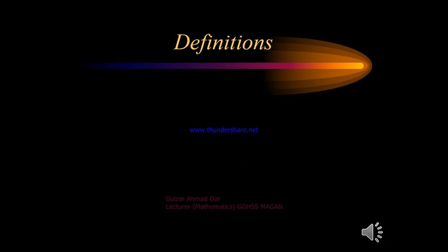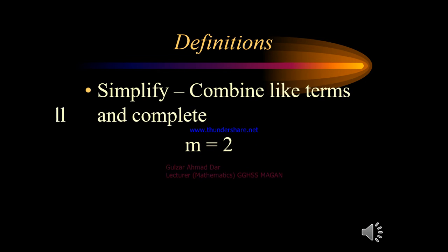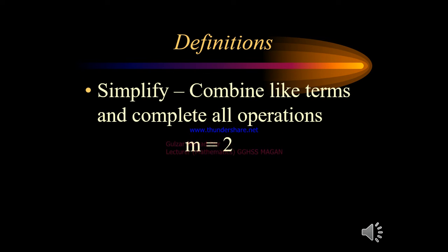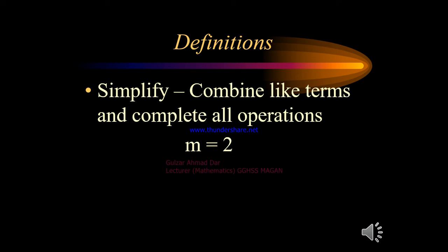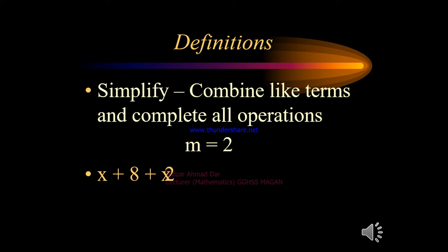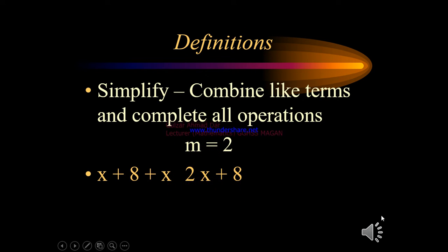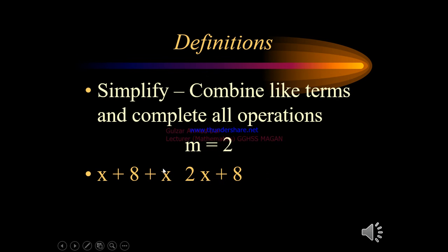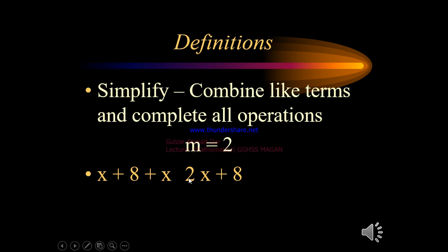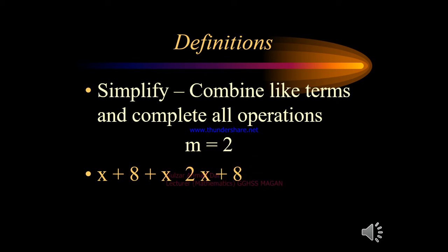Let's proceed to how to simplify by combining like terms. If we have an algebraic expression with similar or like terms, we combine them. In the expression x plus 8 plus x, we combine the first x with the third term x, giving us x plus x, which is 2x, plus 8. This is how we combine like terms and complete the operations.